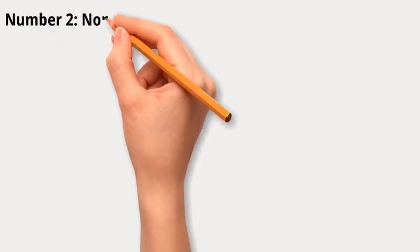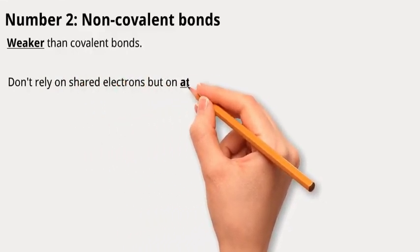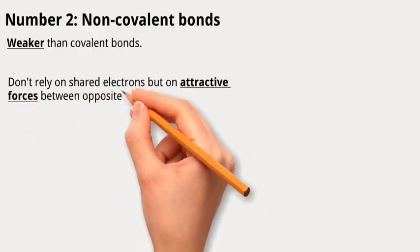Number 2: Non-covalent bonds. Covalent bonds are strong connections between atoms in a molecule. However, interactions between molecules or different parts of large biological molecules involve weaker linkages known as non-covalent bonds. Unlike covalent bonds, non-covalent bonds don't rely on shared electrons, but on attractive forces between oppositely charged atoms.